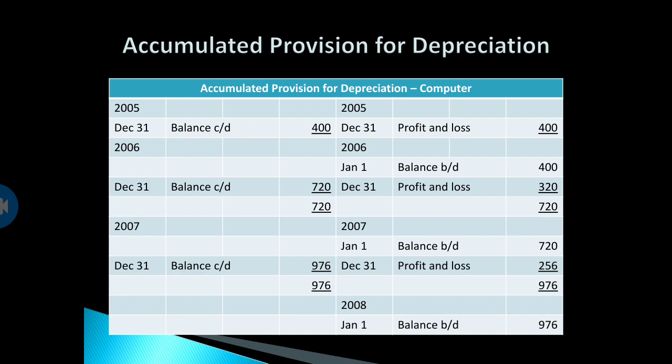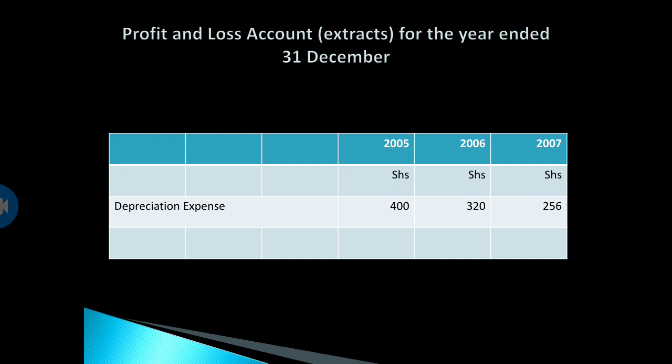The depreciation charge per year keeps on reducing under the reducing balance method. In your profit and loss account, this is an extract for the year ends of 31st December 2005, 2006, and 2007. You have to show the depreciation expense at the end of each year: 400 in 2005, 320 in 2006, and 256 in 2007. This depreciation expense is deducted from gross profit along with other expenses to arrive at net profit.